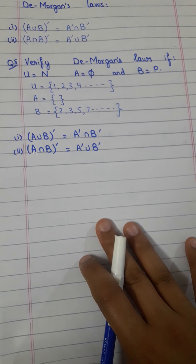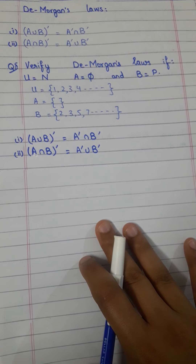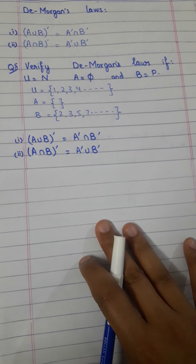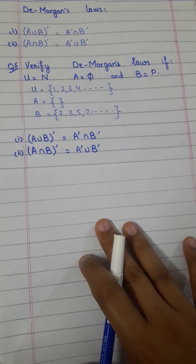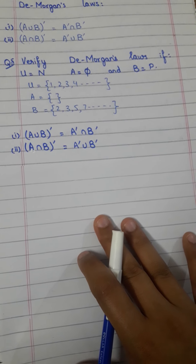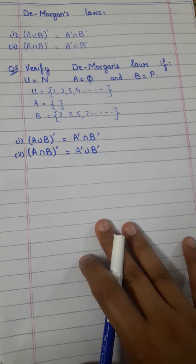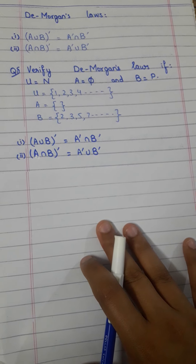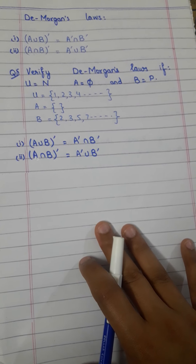Now you have to solve De Morgan's Laws: (A∪B)' = A'∩B', and (A∩B)' = A'∪B'.